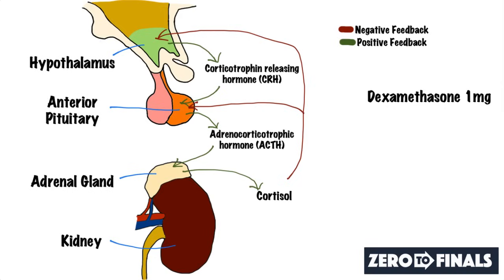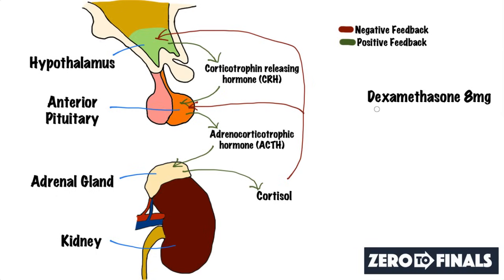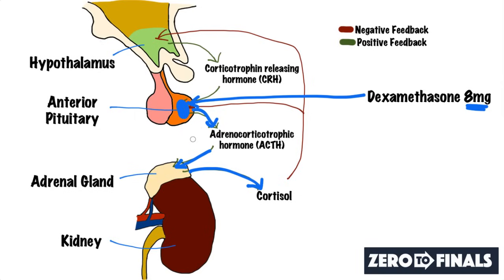If you have a positive low dose test, you go on to do the high dose test with 8 milligrams of dexamethasone. Let's say you have Cushing's disease, where a pituitary adenoma is producing ACTH that acts on the adrenal gland to produce loads of cortisol. This large dose of dexamethasone is enough to cause suppression of the anterior pituitary even with the adenoma present, reducing ACTH and in turn reducing cortisol.